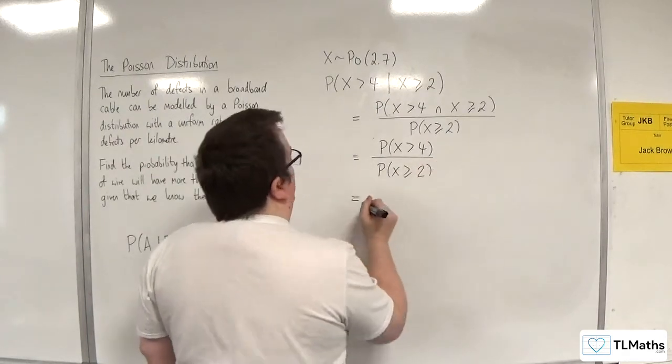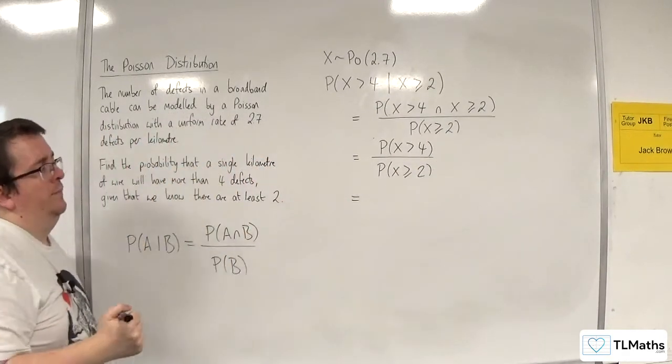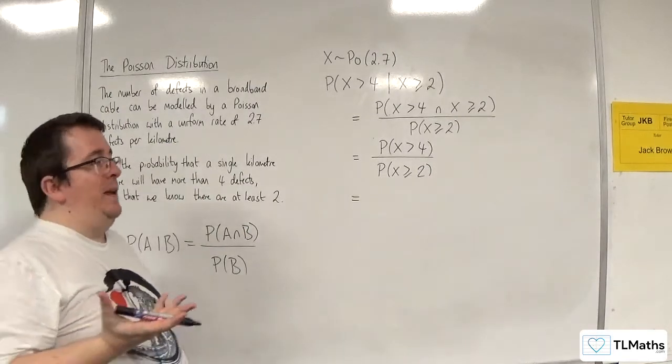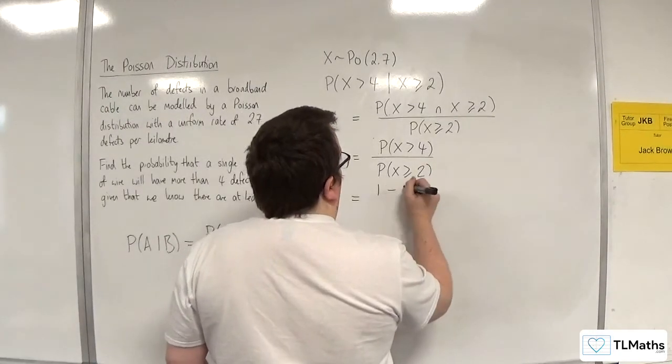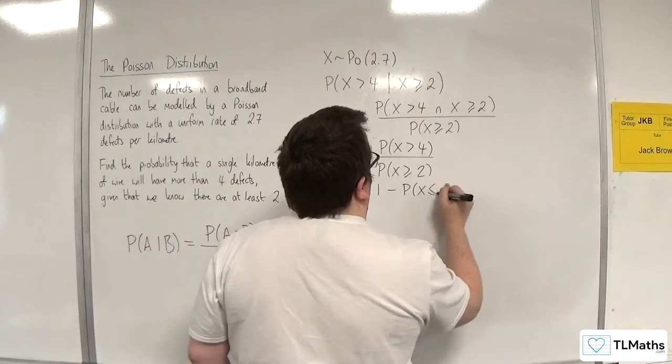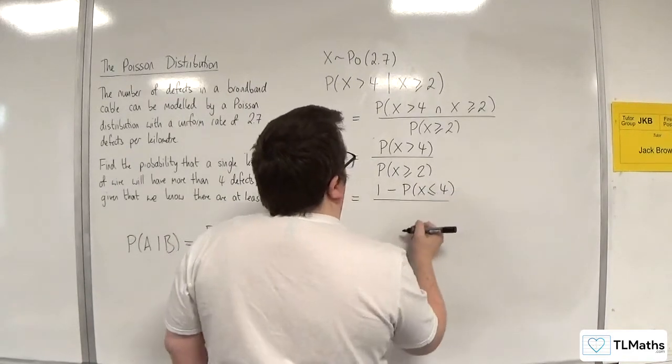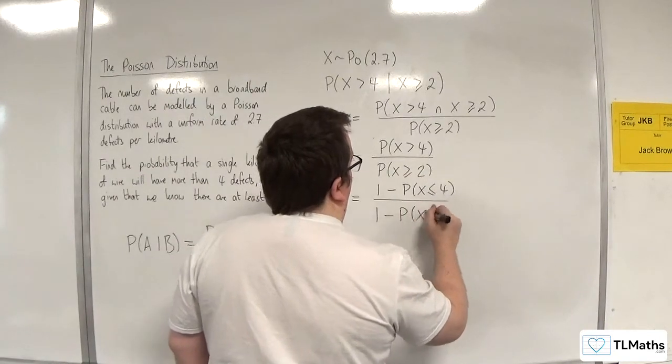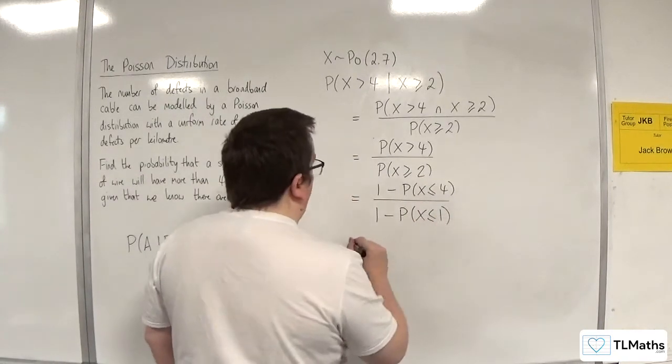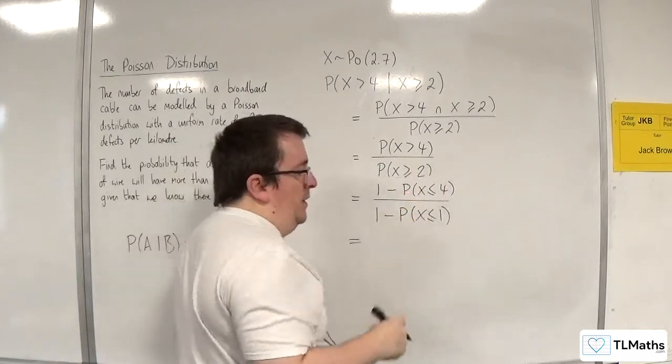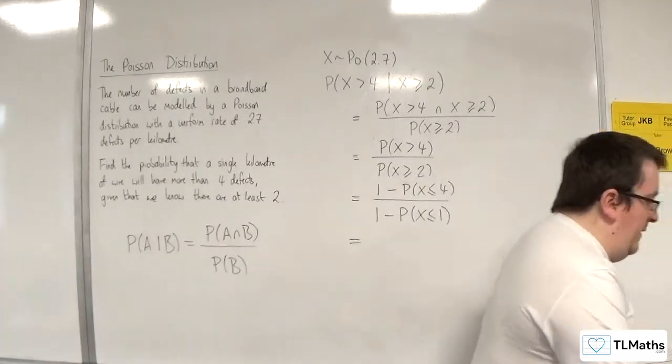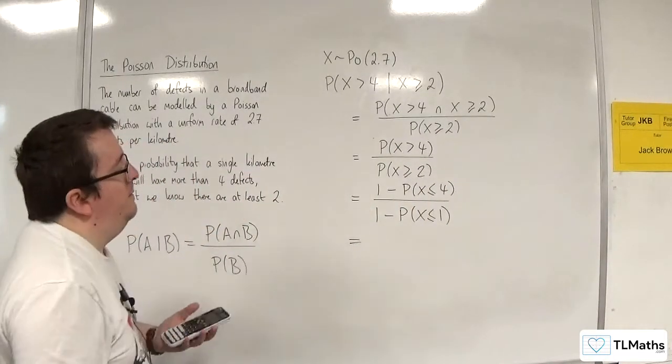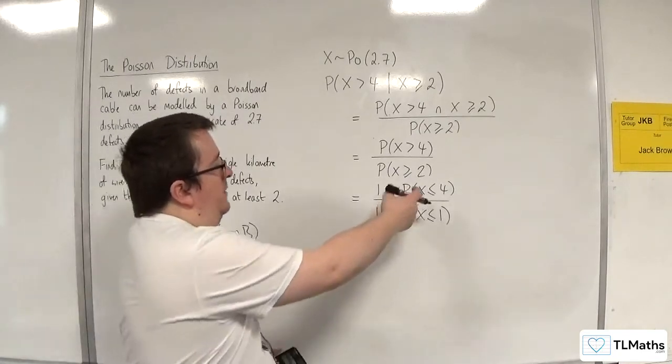So I now need to work out these two probabilities. The probability of X being greater than 4 is going to be 1 take away less than or equal to 4. And greater than or equal to 2 is going to be 1 take away less than or equal to 1. Now, of course, you may well have a calculator where you can work out those probabilities directly. That's perfectly fine. I'm using the ClassWiz, so I've got to work these out.